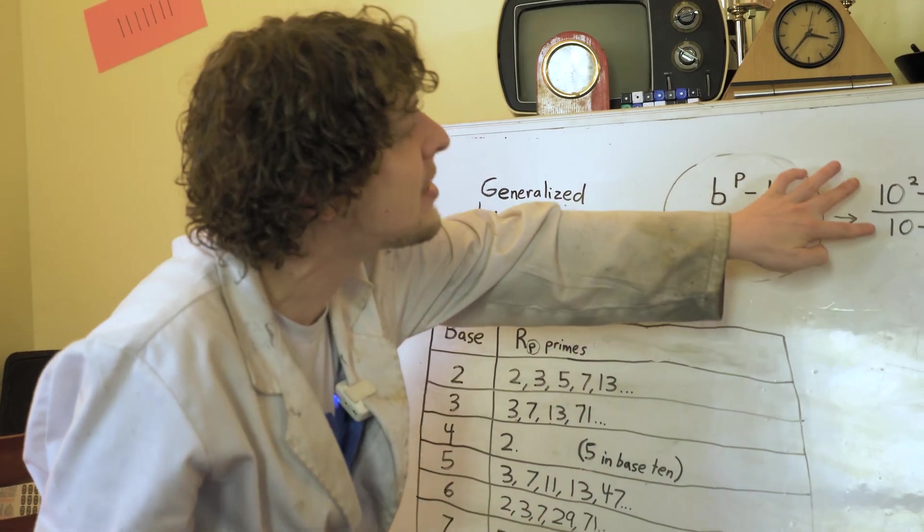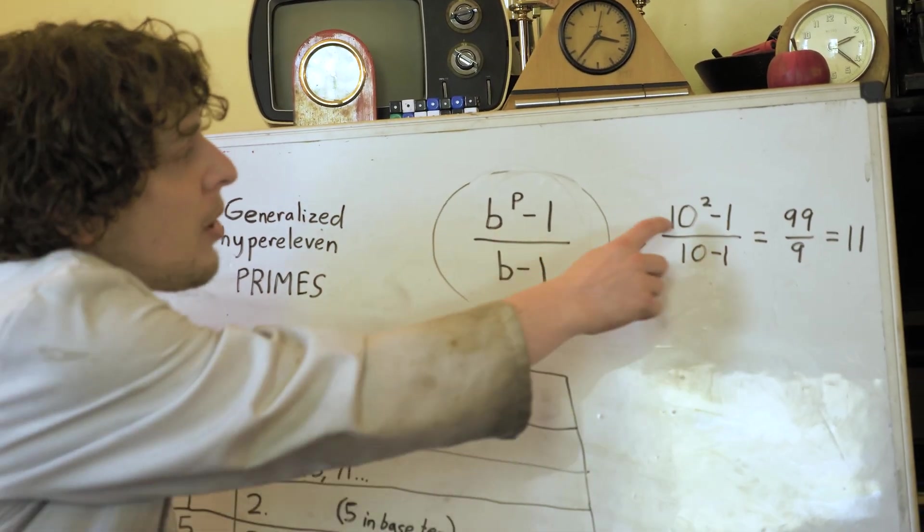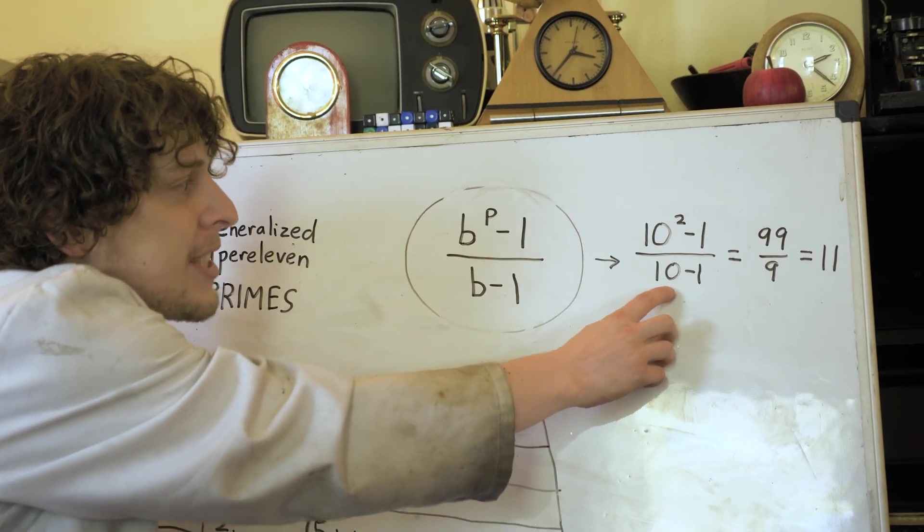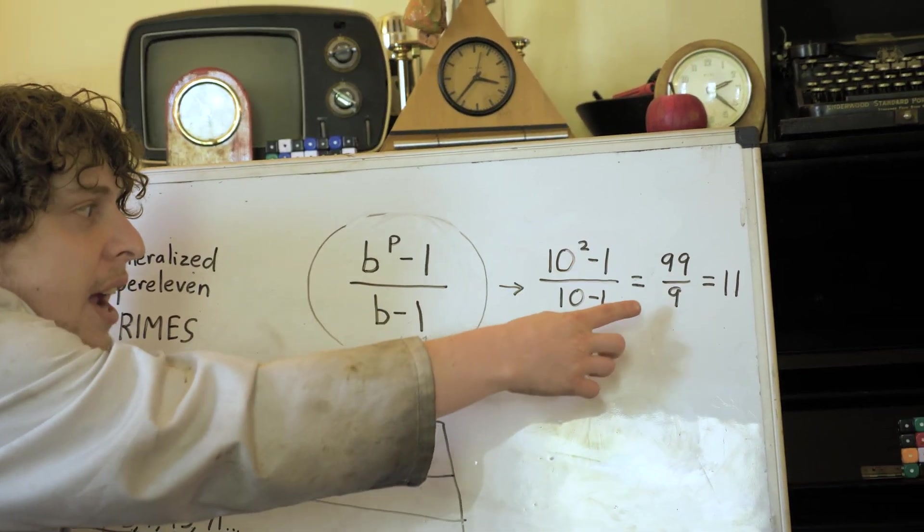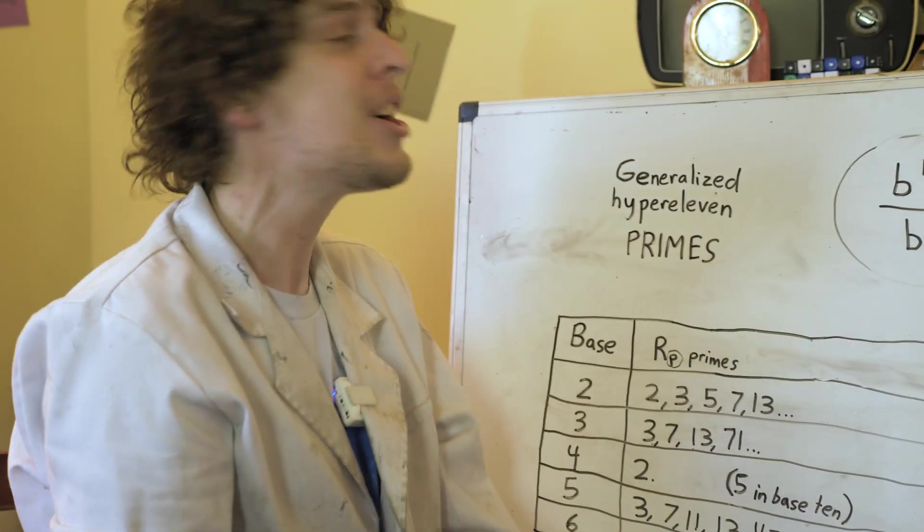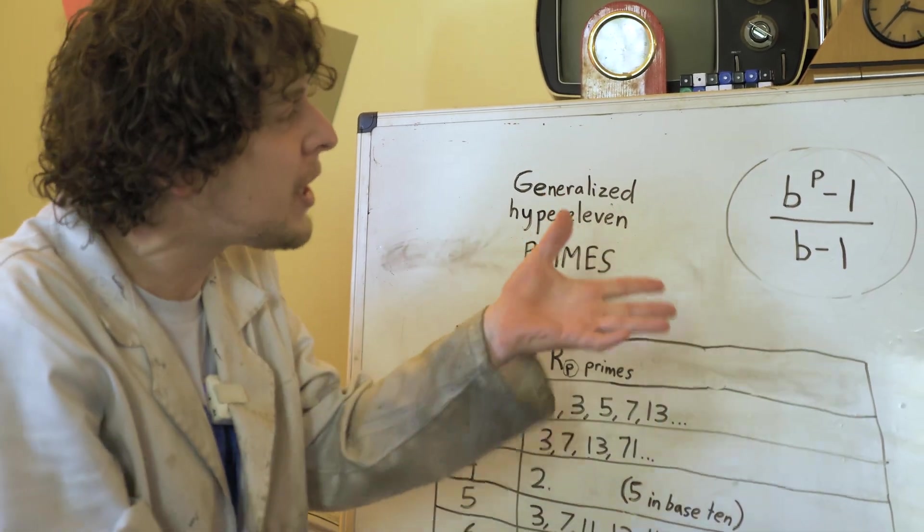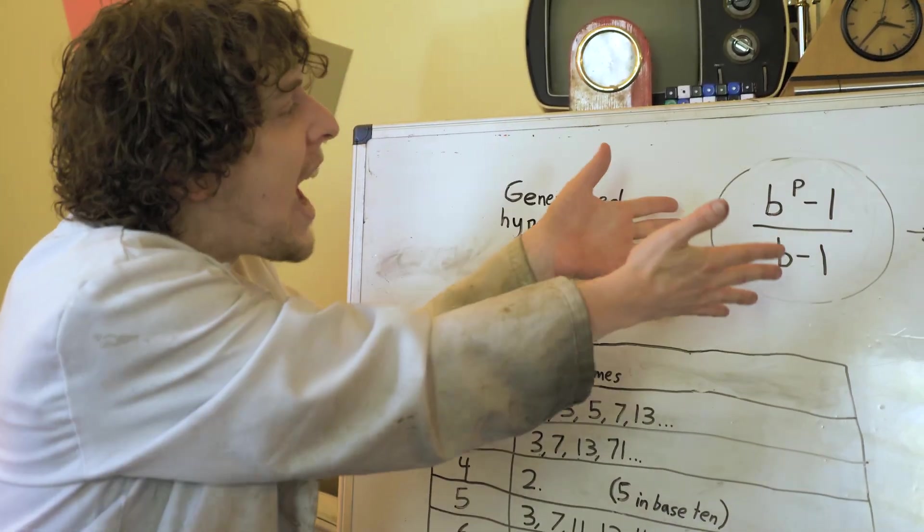Like if we're talking about our base 10 system, and we look at the second prime, well, 10 squared minus one over 10 minus one gives us 99 over nine gives us 11, which does turn out to be a prime in that case. So this generalized hyper 11 formula is really what we're looking at. When is that prime?